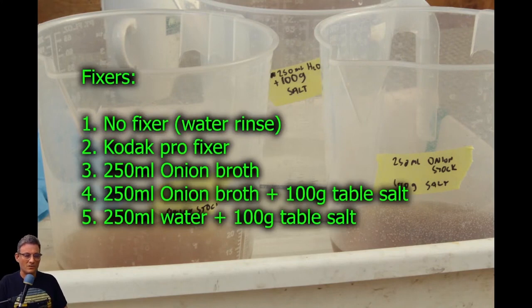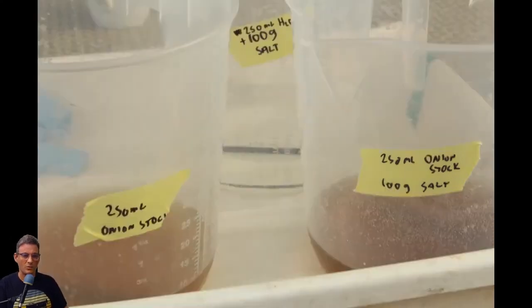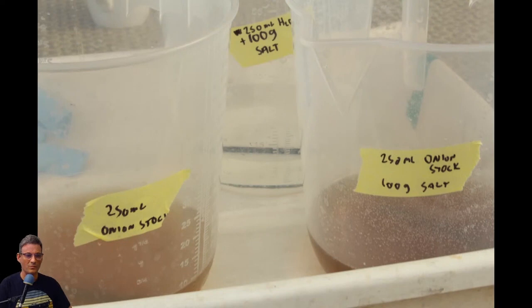Some of it I used no fixer at all, I just rinsed it in water because you've got to see what happens if you don't put any fixer at all in there. Second one, of course, I used the Kodak Pro fixer. So you've got to see what happens when I'm using the proper stuff. And then I made an onion broth with salt and then just water and salt because I'd heard somewhere that salt water can also be used to fix. So I want to try that as well while I'm at it.